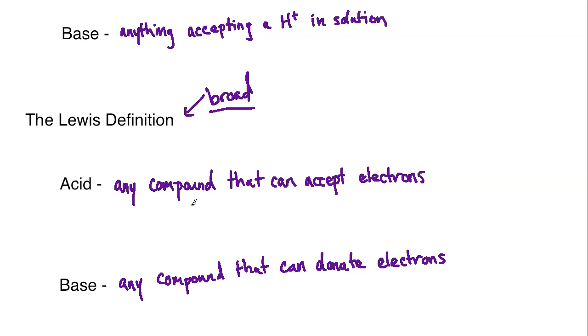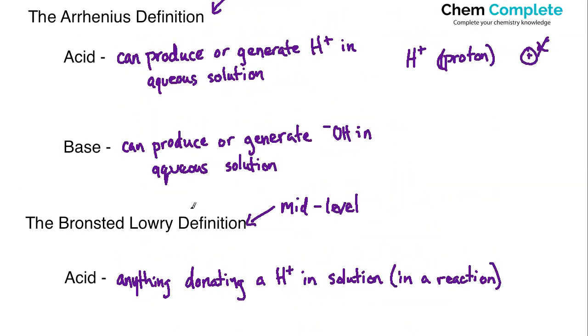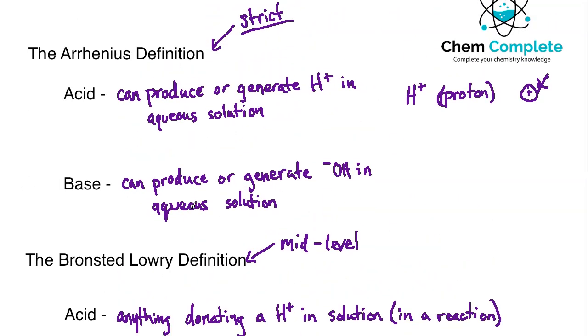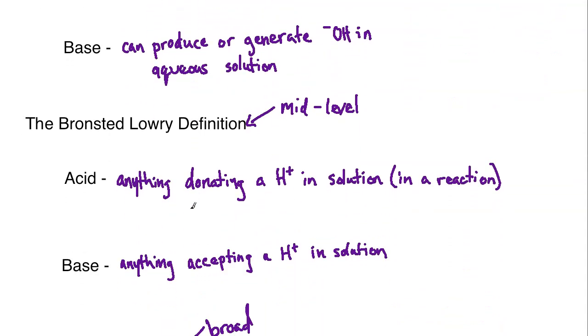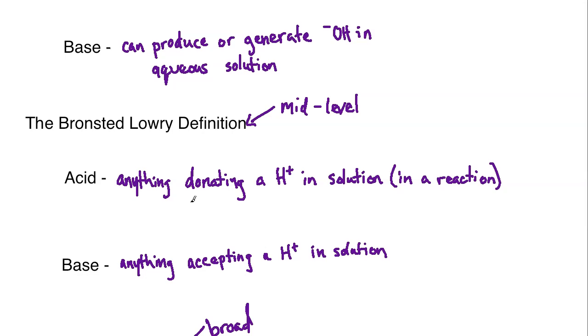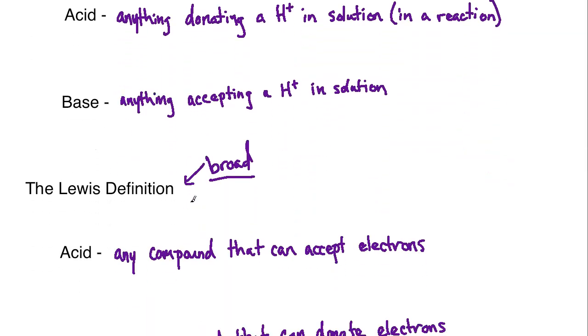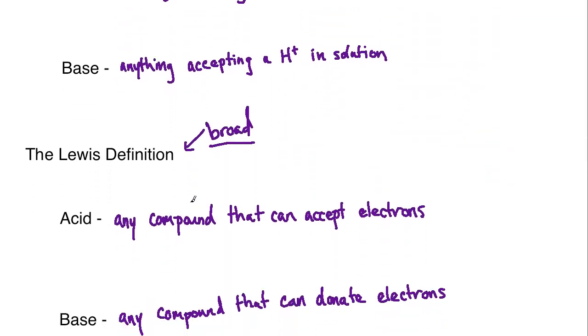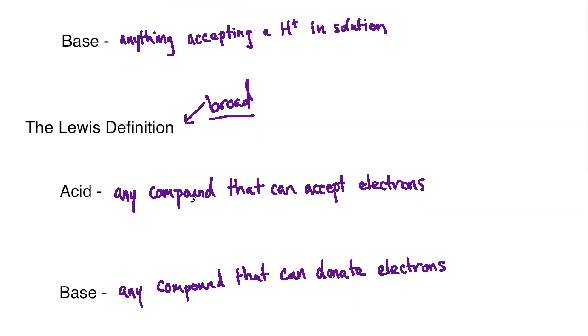So that is it. I want to wrap it up there. You've got three definitions. Arrhenius, which is the strictest. The Bronsted-Lowry, which is mid-level. It's usually the starting point for most students when they get into general chemistry. And then you've got the Lewis definition, which is the broadest definition. That one really comes into scope during organic chemistry. So that is it. One more reminder.